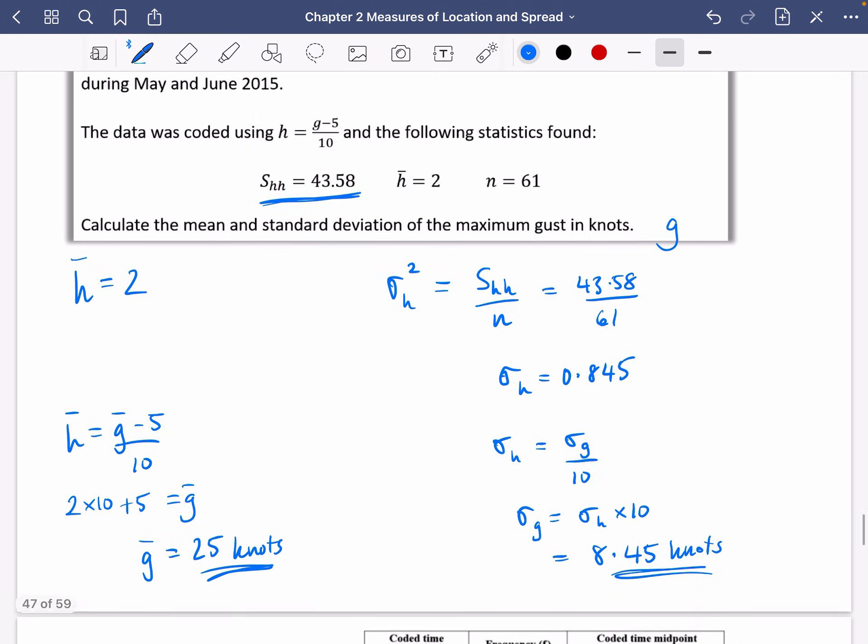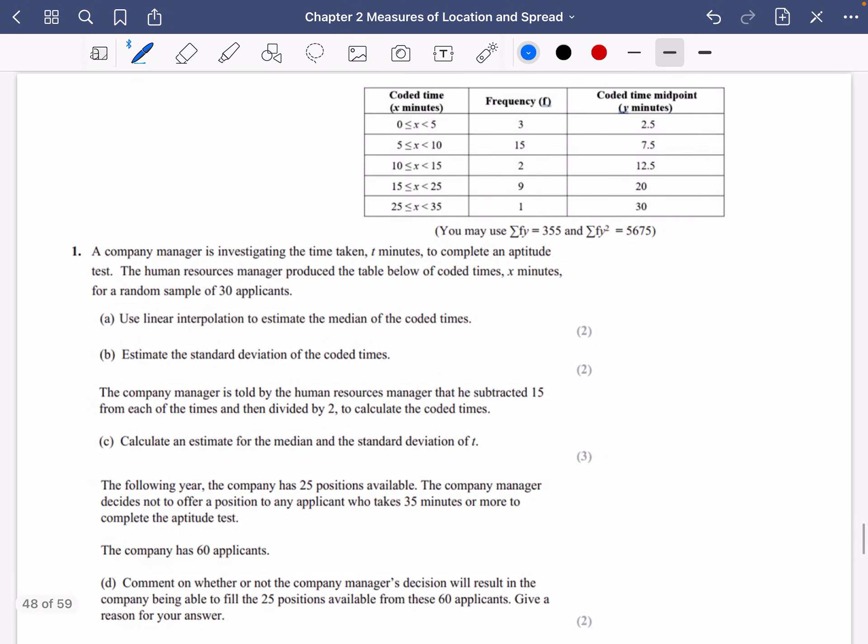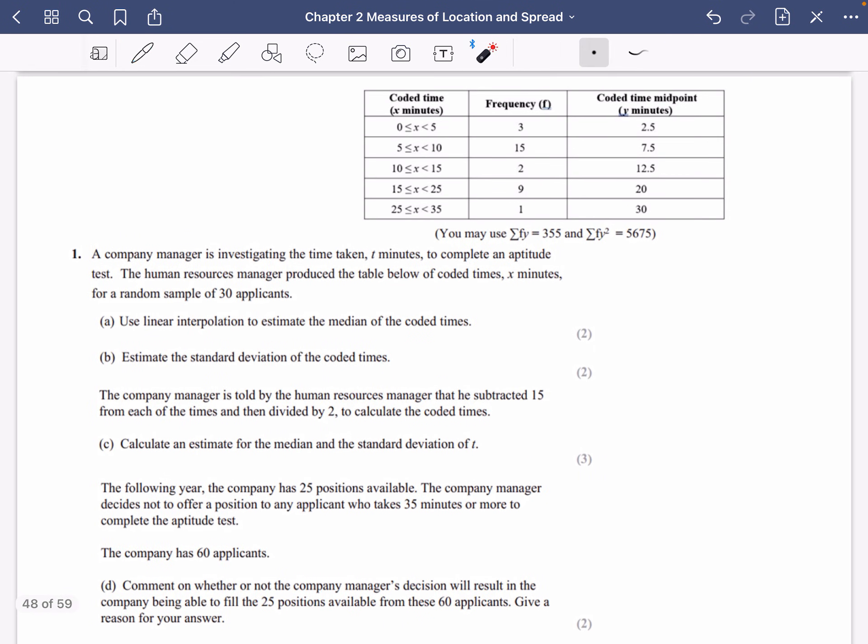Okay, so we are nearly there. I'm going to just do one final example that we've got here because it's got some interesting bits at the end. It says here that a company manager is investigating the time taken in 10 minutes to complete an aptitude test. The human resources manager produced the table below of coded times X minutes from a random sample of 30 applicants. So we know there's 30 of them. That's going to make it a bit easier.